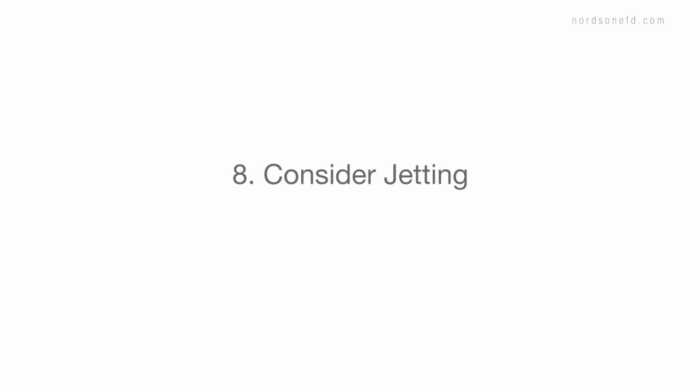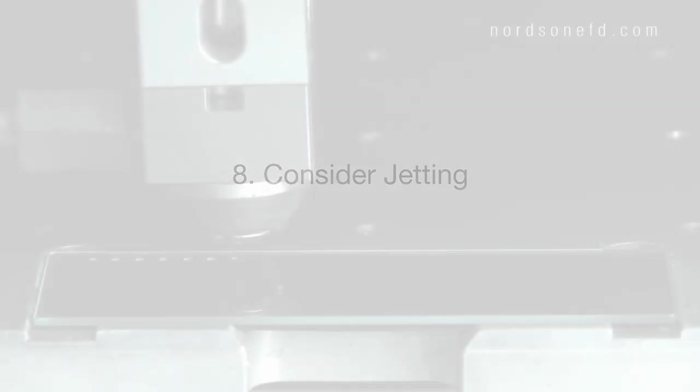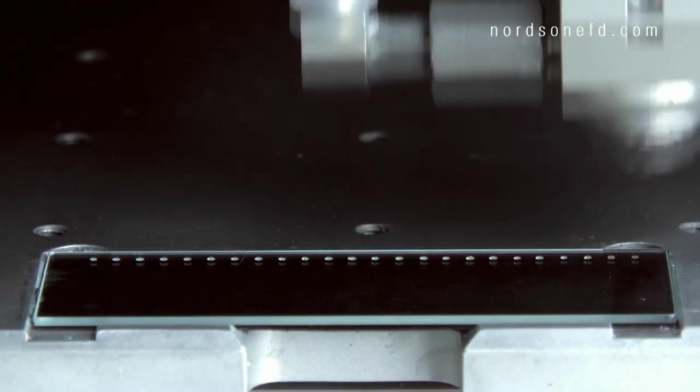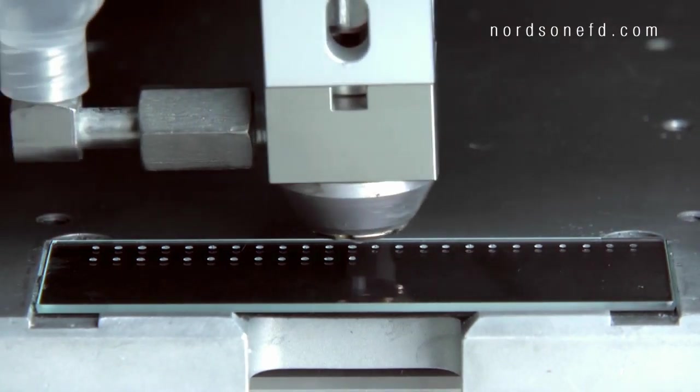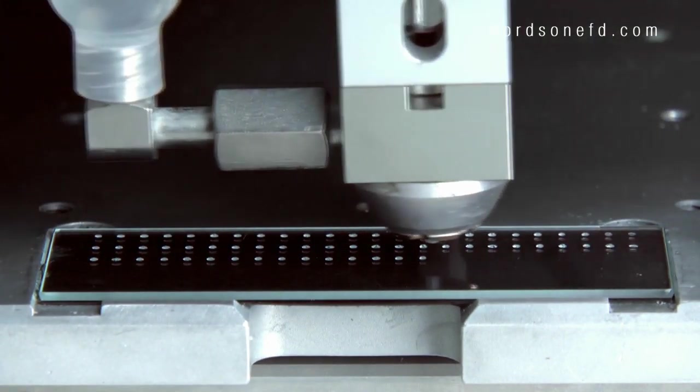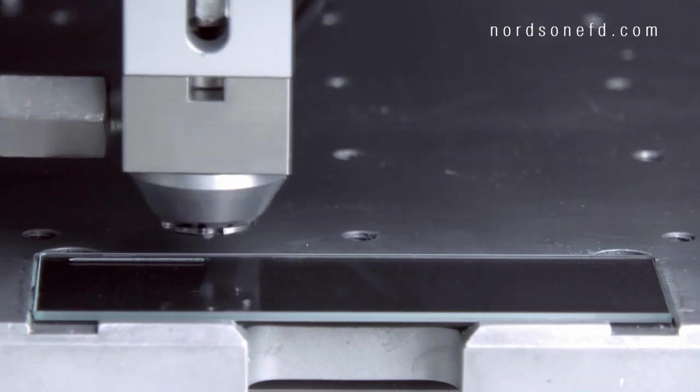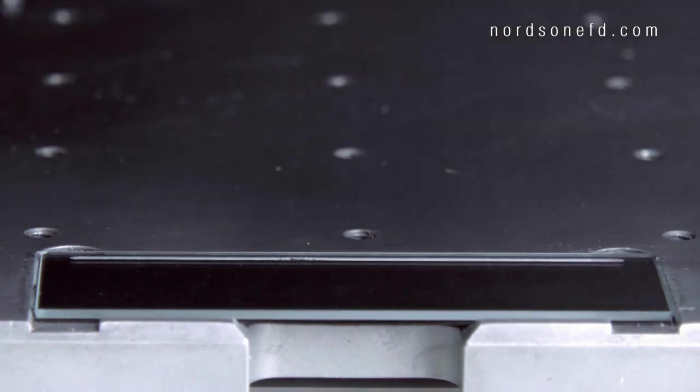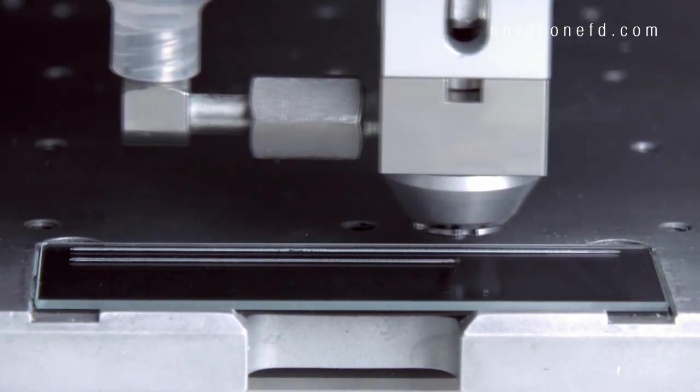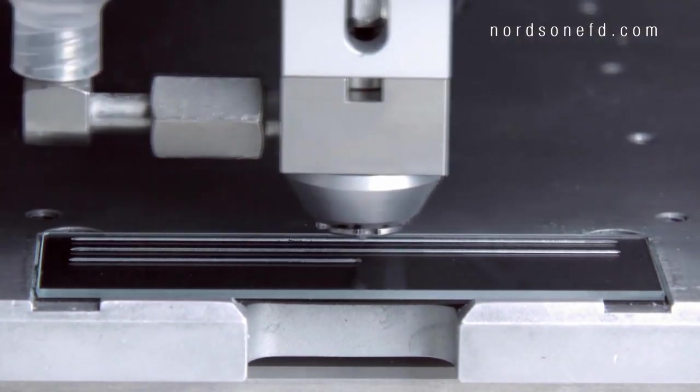Eighth, consider jetting trade-offs. Our pneumatic liquidyne jet valve can dispense cyanoacrylates without ever touching your substrate, making it ideal for high-speed dispensing over uneven surfaces. The trade-off is that you need to keep the valve jetting continuously, which could require process adjustments.